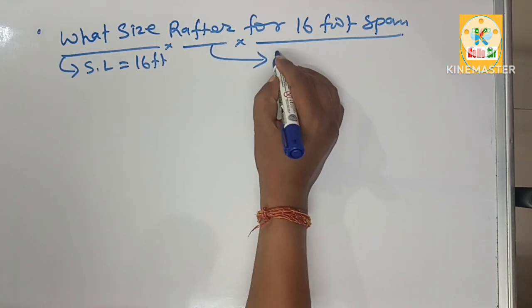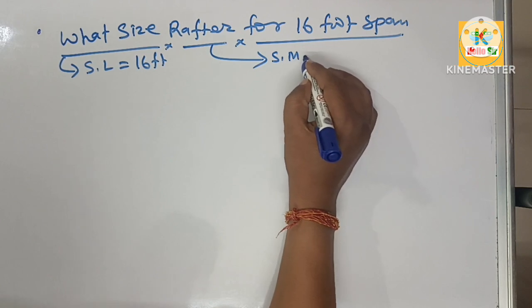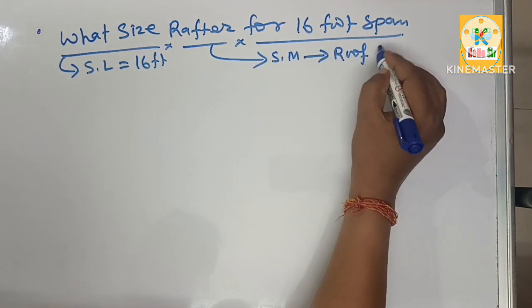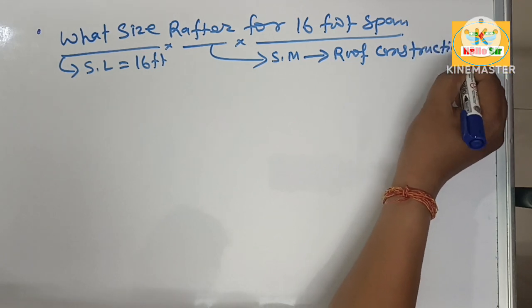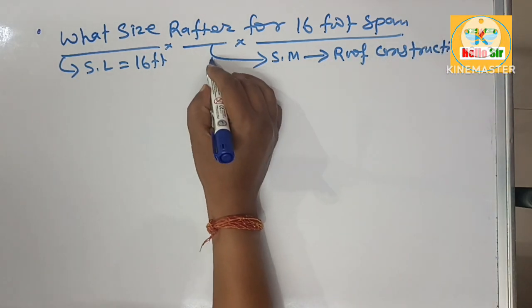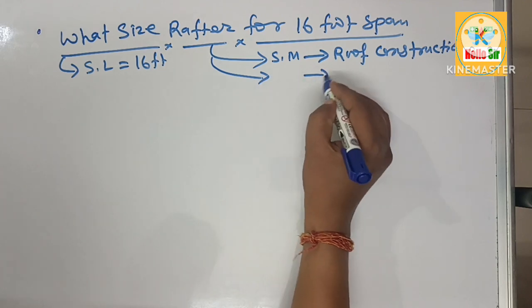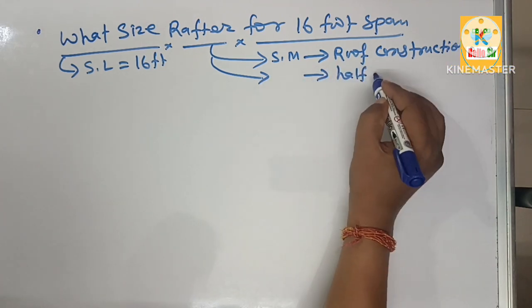You know that a rafter is a structural member in roof construction. It is a sloping piece of wood that supports the load of the roof and it can span half the width of a building.